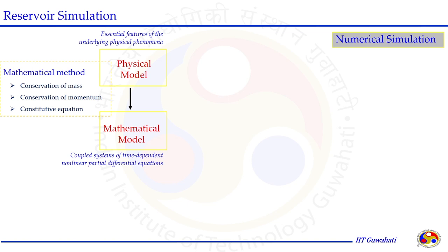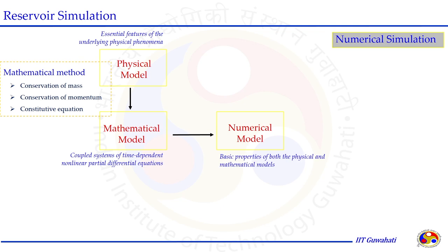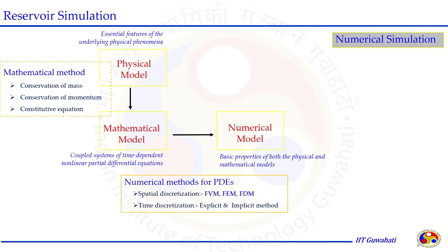Constitutive equations need to be provided to define physical properties or phenomena that change with respect to other parameters. If a heat equation is also needed, it should be included for thermal reservoir processes. This mathematical model needs to be converted into a numerical model using both physical and mathematical model properties. Numerical methods for converting PDEs can be spatial discretization — finite volume, finite element, or finite difference — or time discretization using explicit and implicit methods.